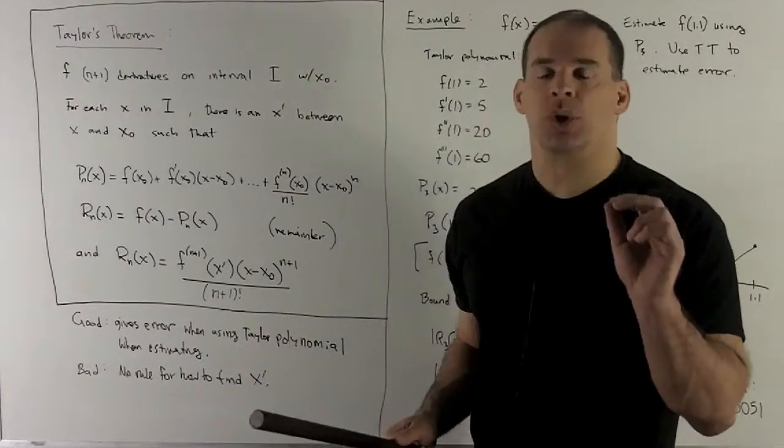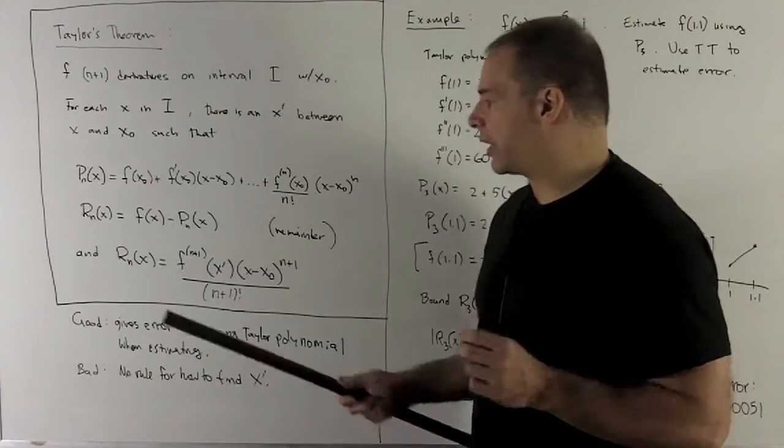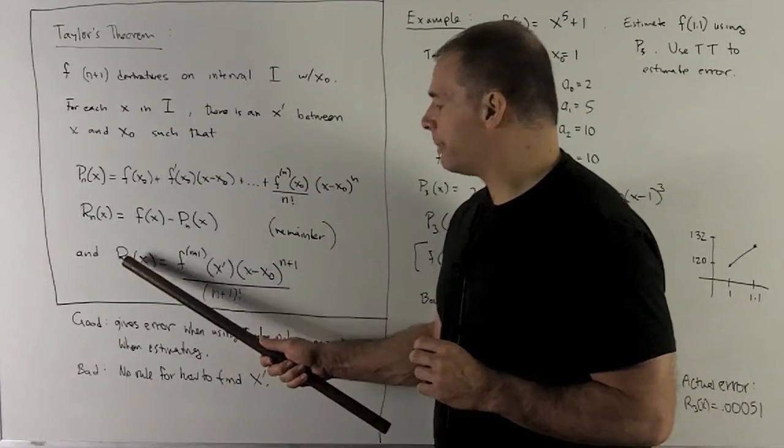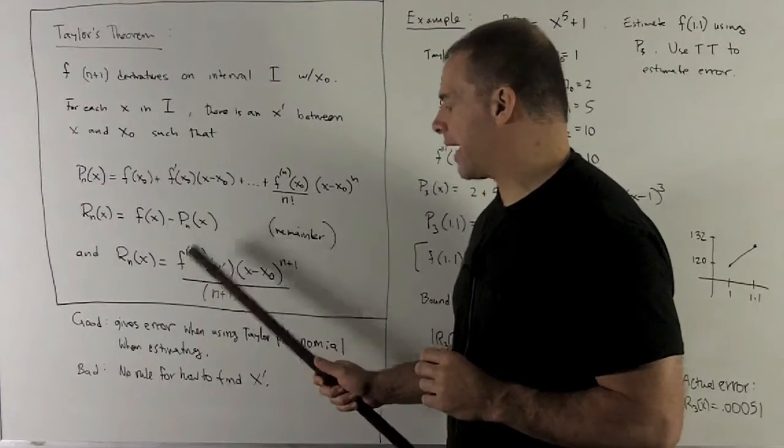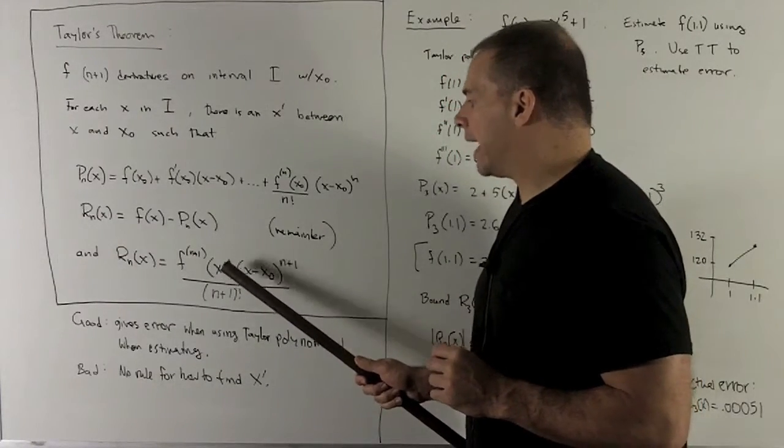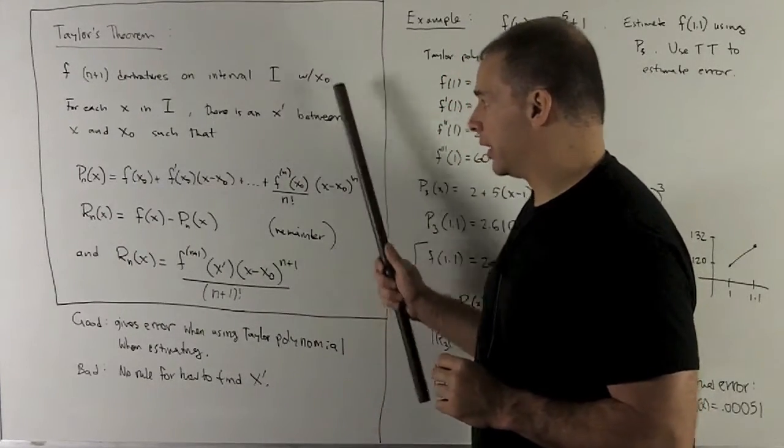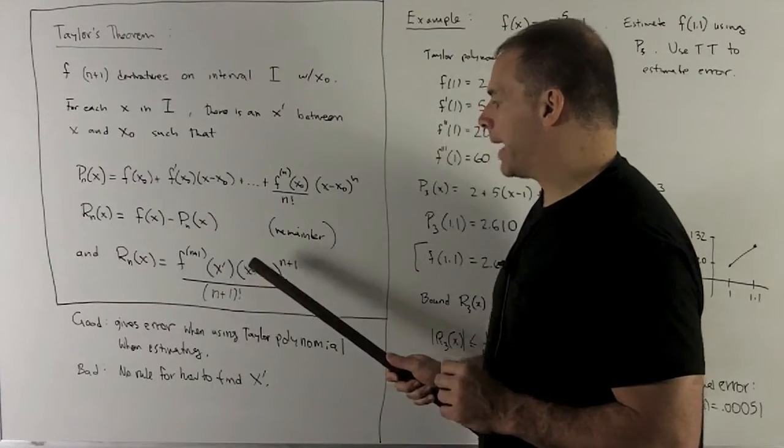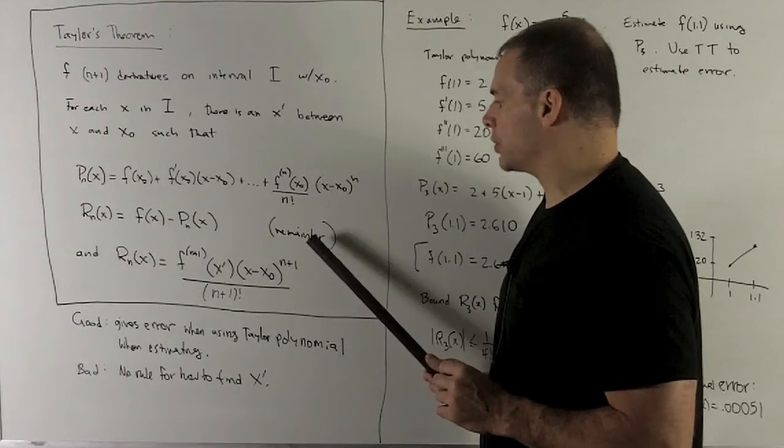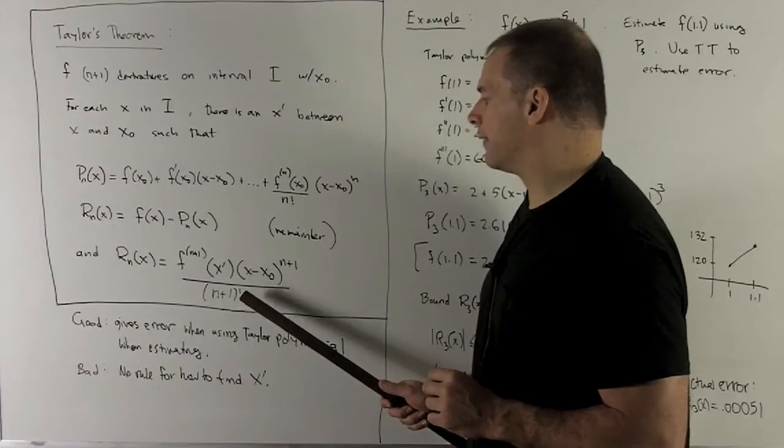And then the punchline's down here. We can get an actual calculation of our remainder as we're going to take the (n+1)st derivative of f, evaluate at this point x' that the theorem guarantees, multiply by (x - x₀) raised to the (n+1)st power, then divide by (n+1) factorial.